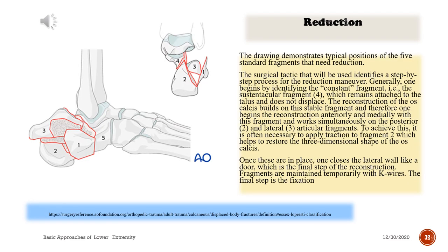Reduction: the drawing demonstrates the typical positions of five standard fragments requiring reduction. One begins by identifying the constant fragment — the sustentacular fragment — which remains attached to the talus and does not displace. Reconstruction builds on this stable fragment, working anteriorly and medially, then simultaneously addressing the posterior and lateral articular fragments. Traction to fragment 2 helps restore the three-dimensional shape of the os calcis. One then closes the lateral wall like a door as the final step. Fragments are maintained temporarily with K-wires before final fixation.